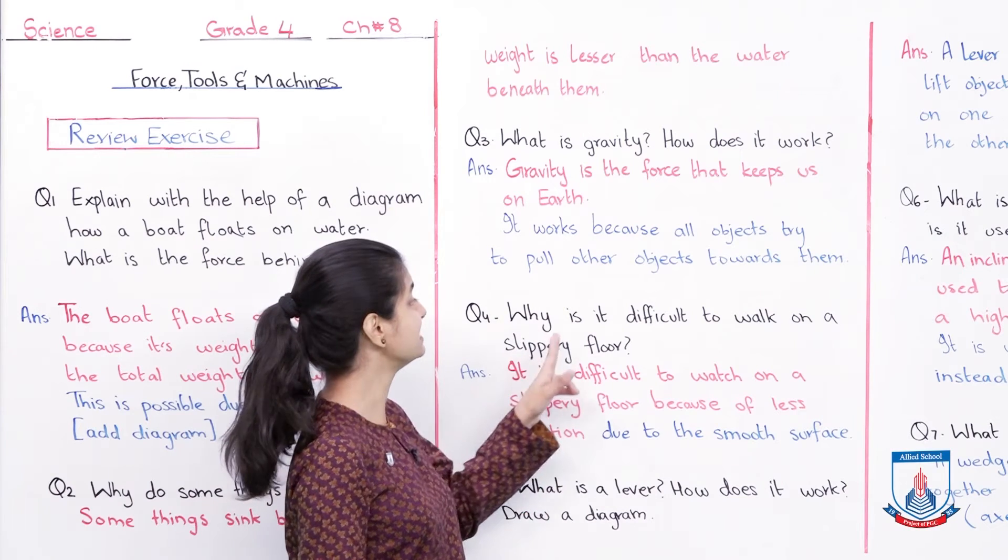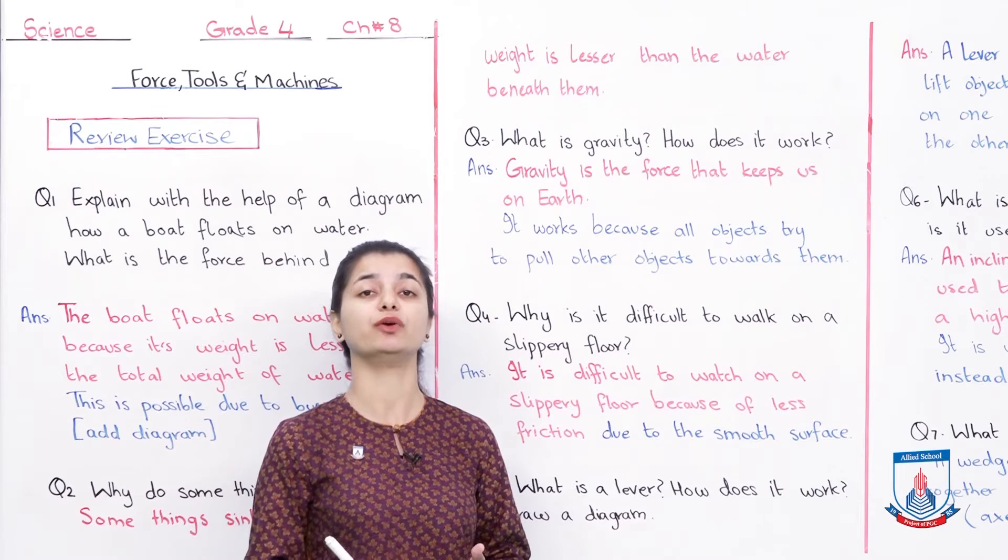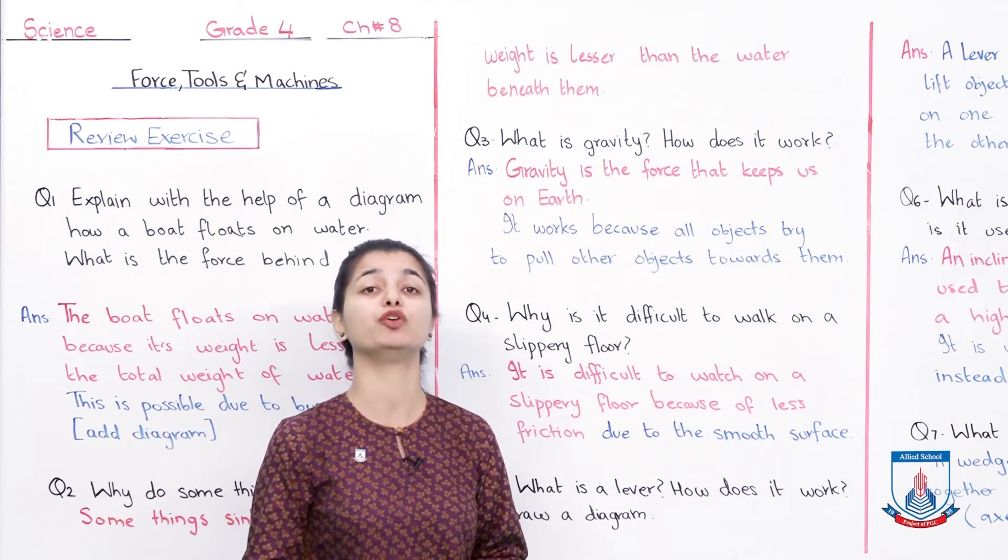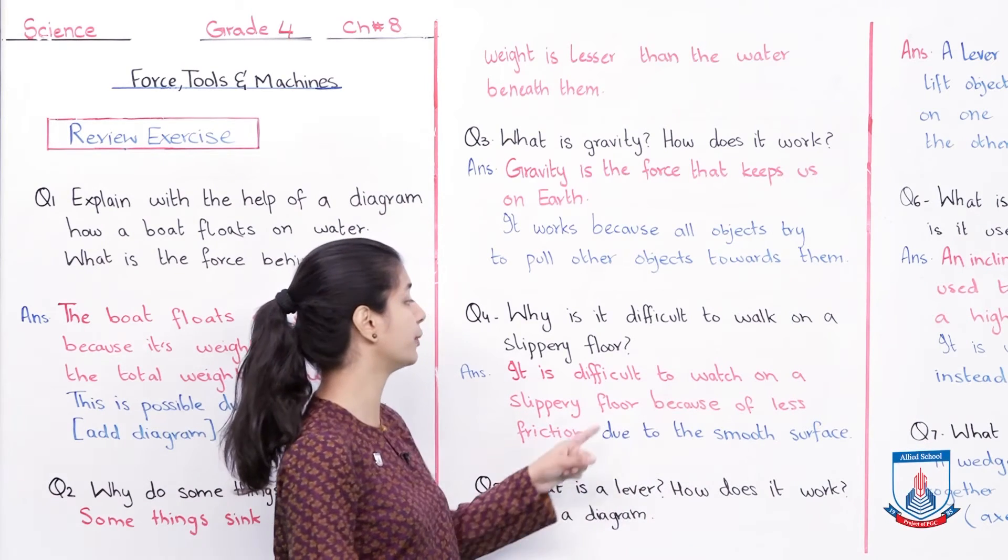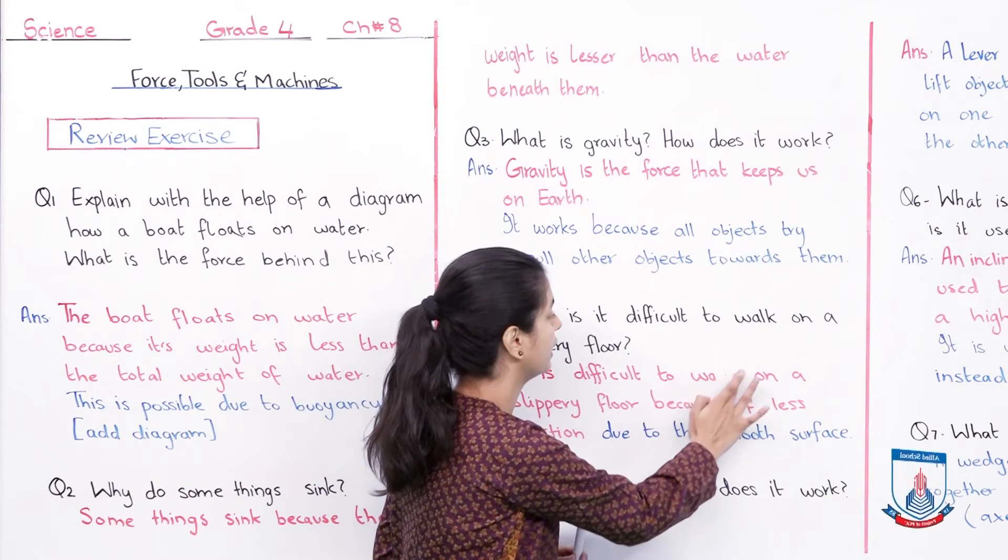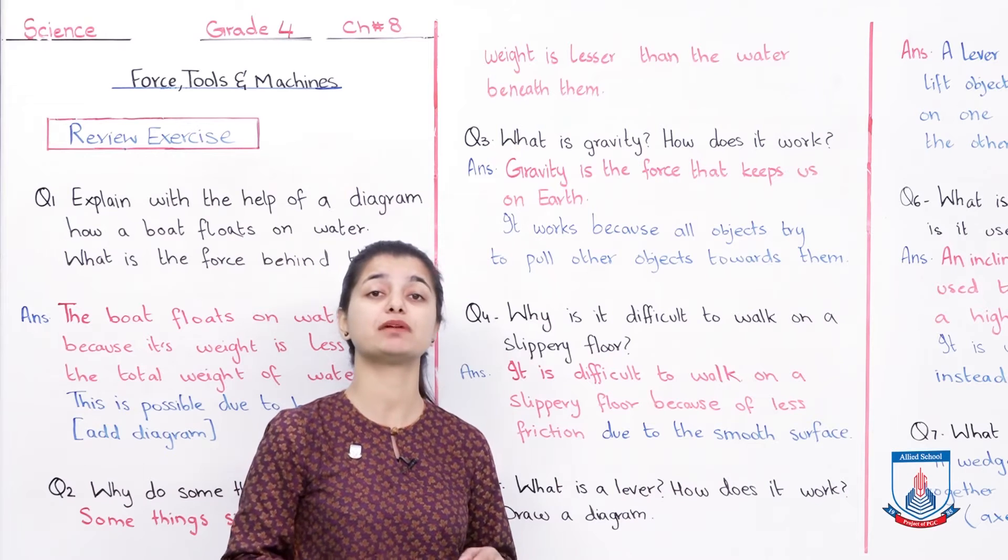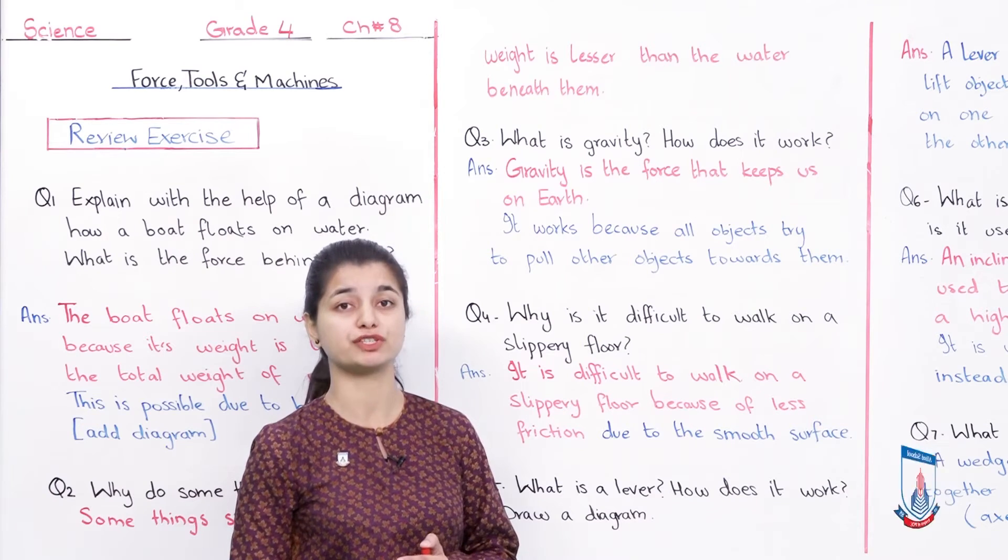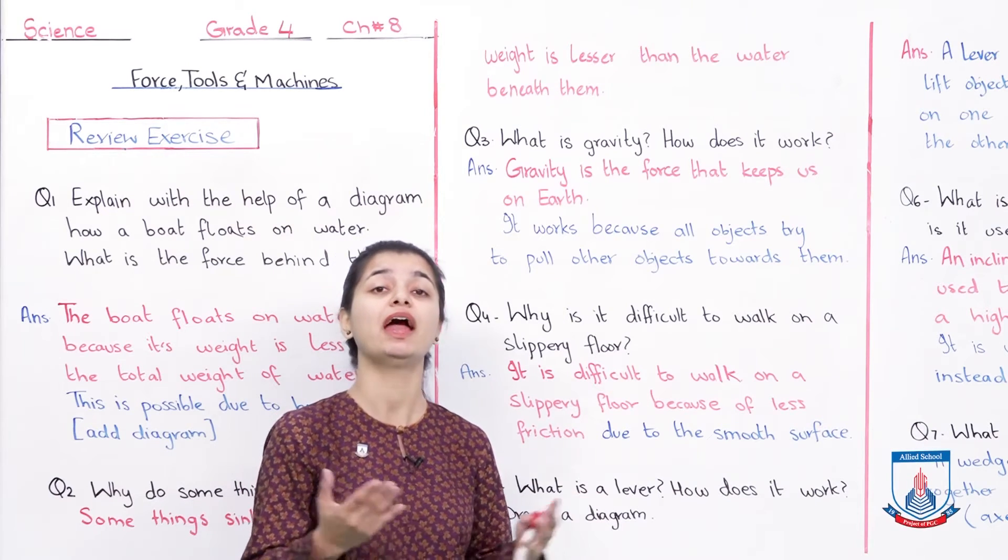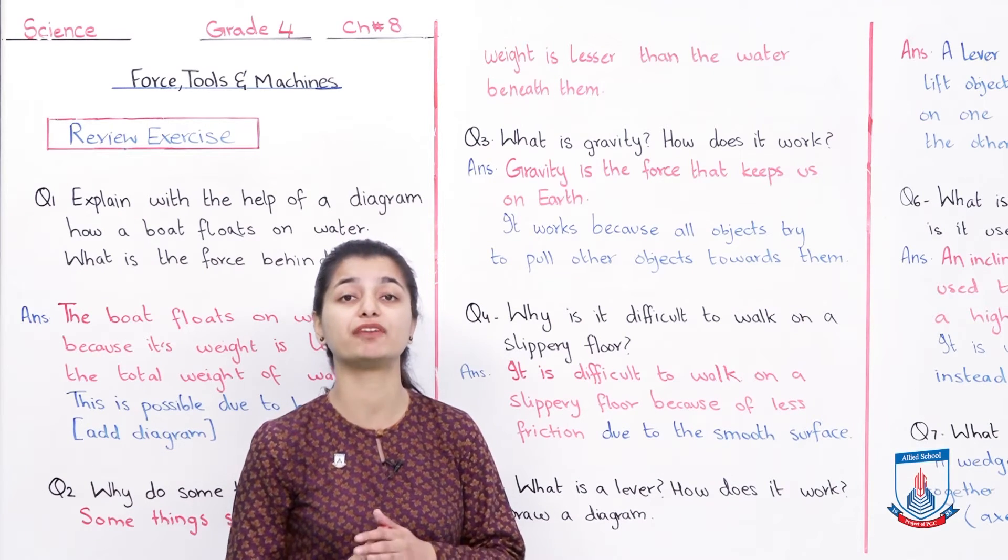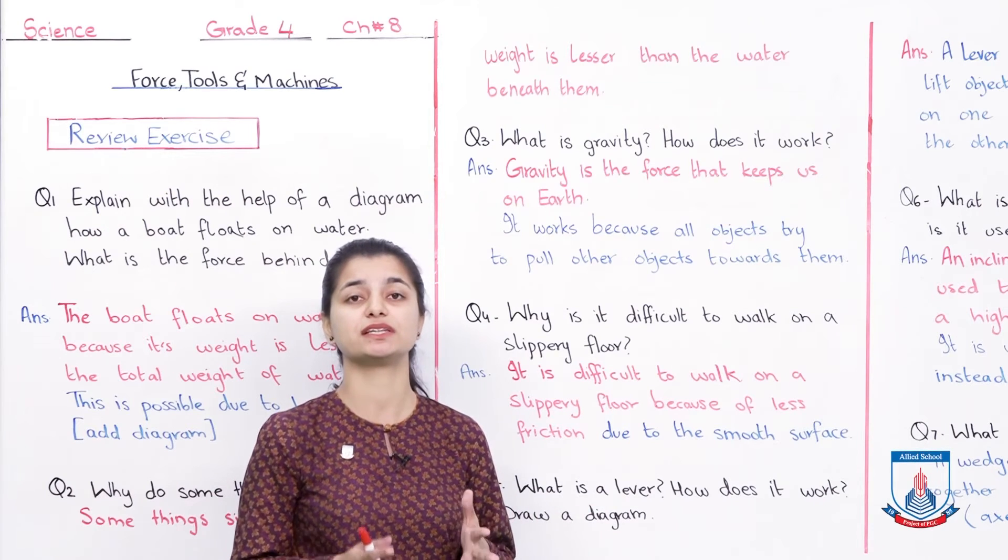Question 4: Why is it difficult to walk on a slippery floor? It is difficult to walk on a slippery floor because of less friction due to the smooth surface. Rough surfaces have more friction; smooth surfaces have less friction. On a slippery floor with less friction, it is difficult to control your speed and movement.